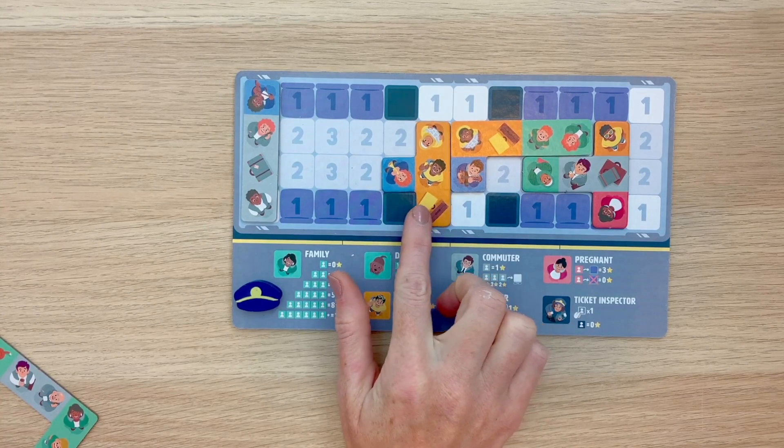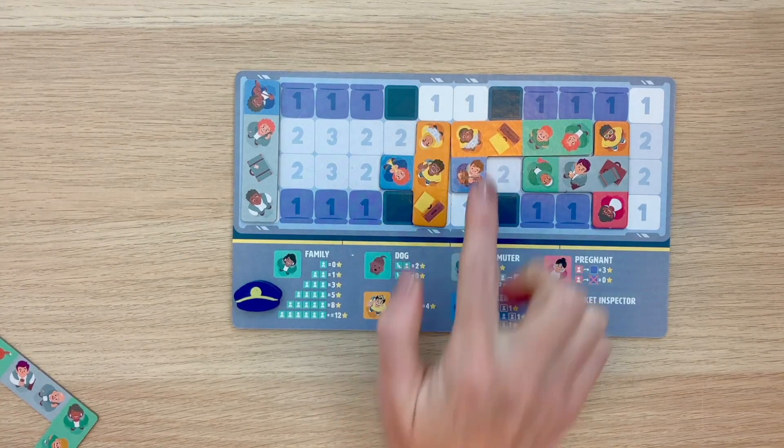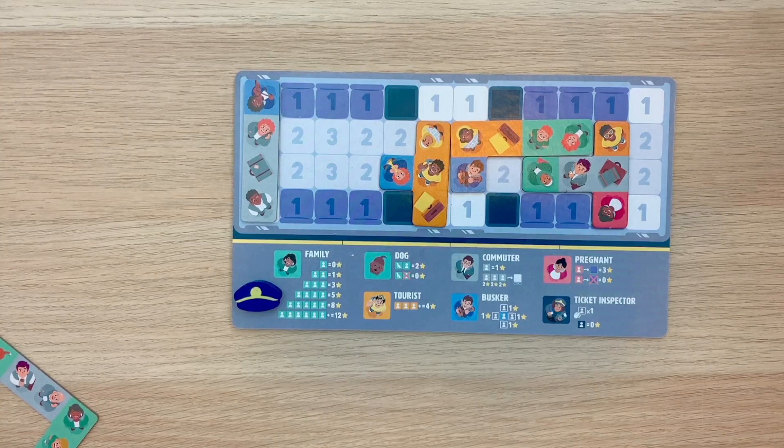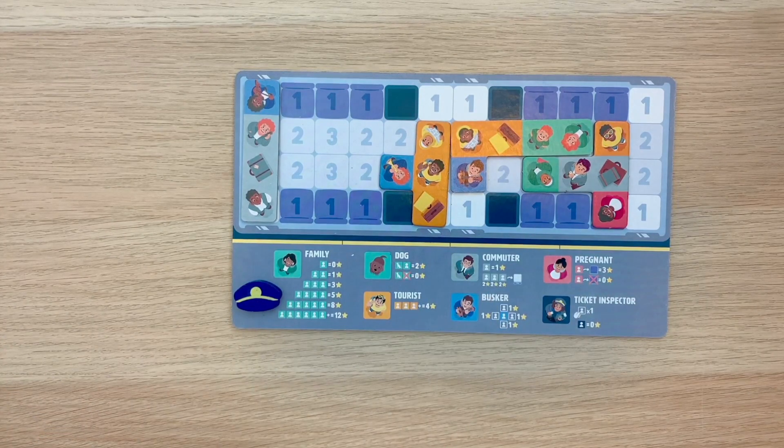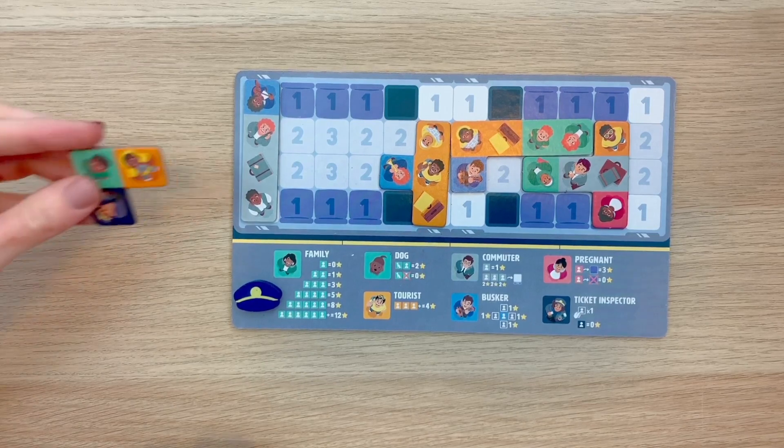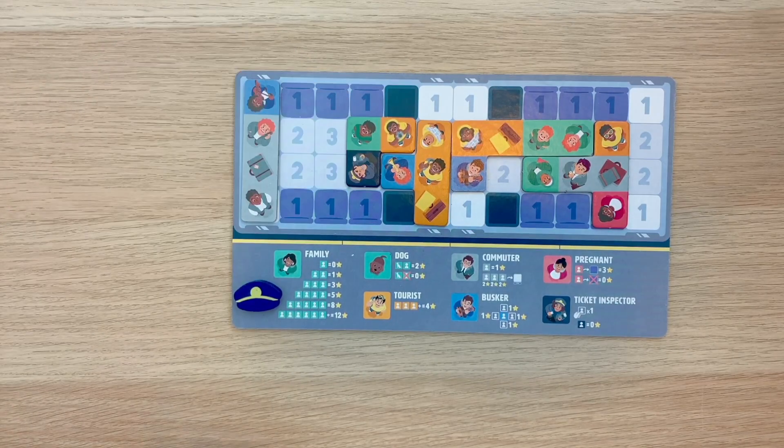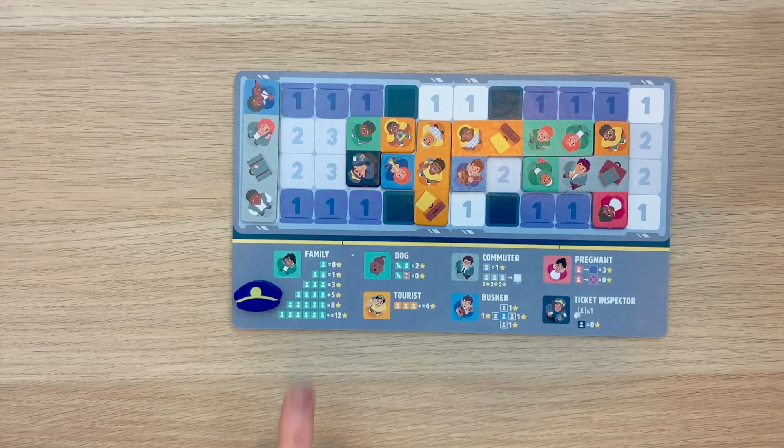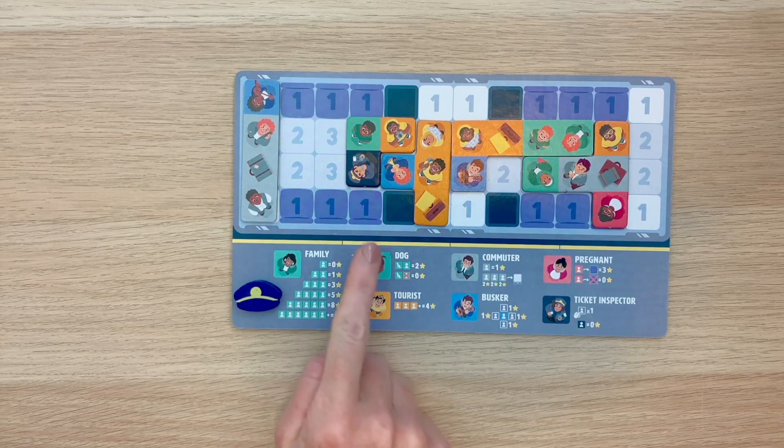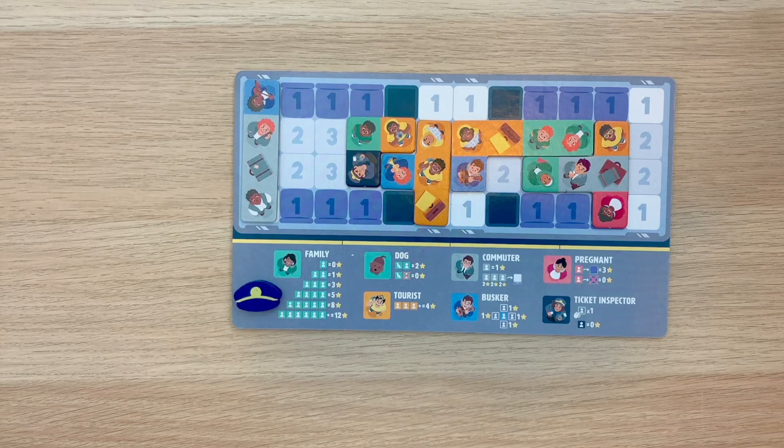Tourists simply need to be in a group of three to score. Groups of three tourists will get you four points. Next up are buskers. They love an audience. They score one point per passenger that touches them. Just remember, passengers only count as touching them on their sides, not the corners. So buskers can only score you a max of four points.